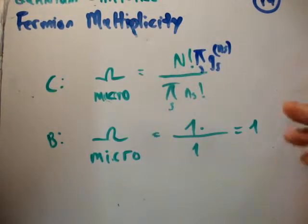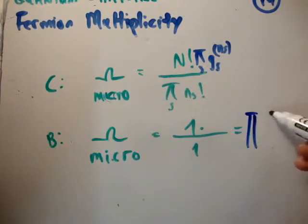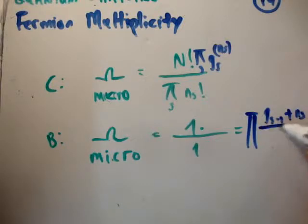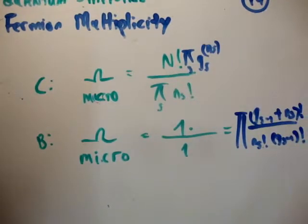And for bosons, we found that we had a pretty complicated expression that looked something like this. It had something like this. It looked something like that. In actual fact, it looked exactly like that.